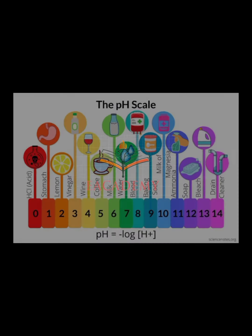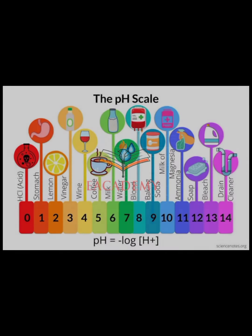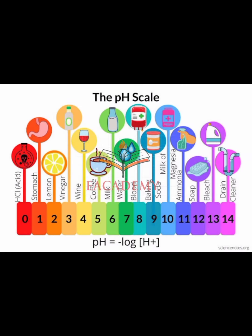Stomach acid 2.0, lemon juice 2.2, vinegar 3.0, apples and soda 3.0 to 3.5, sauerkraut 3.5 to 3.9, pickles 4.0, wine and beer 4.5.